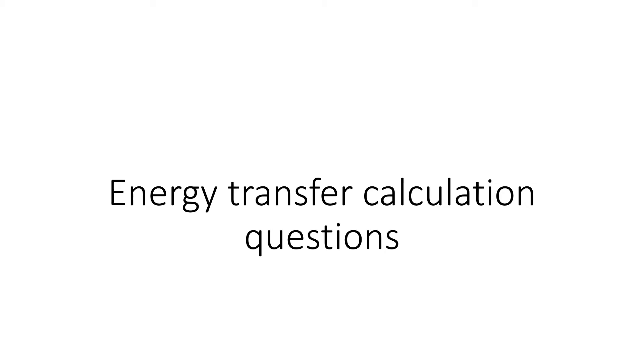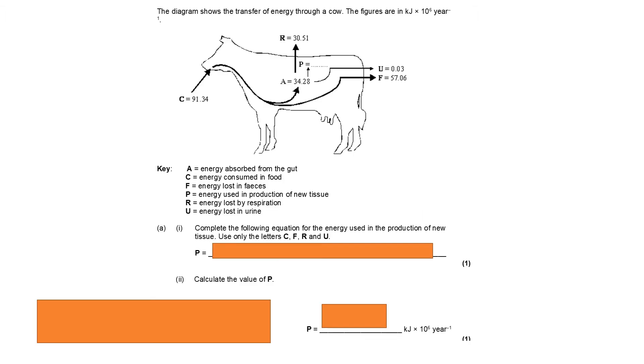This video is on energy transfer calculation questions. We've got an example question here of energy transfer which tells us that the diagram shows the transfer of energy through a cow, and that the figures are in kilojoules times 10 to the power of 6 per year. So that part of the question is really important, and we might need that later on.